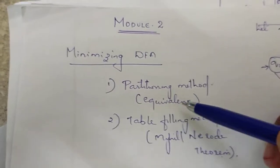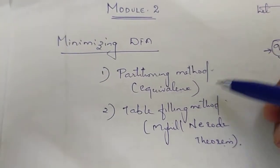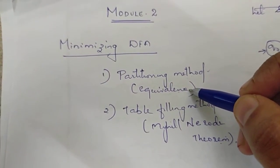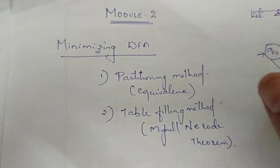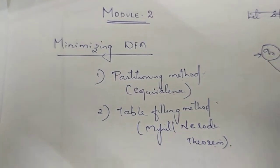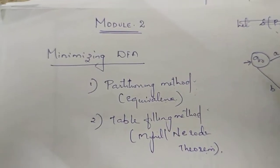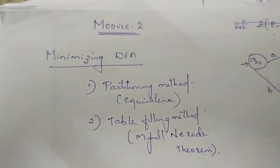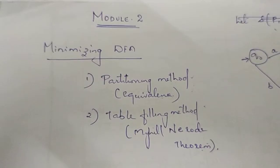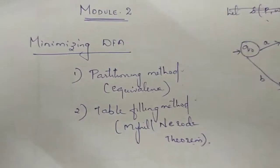For DFA minimization, we find the relation of zero equivalence. If we use zero equivalence, we set the final states in the DFA and the non-final states separately. Then we compute one equivalence, two equivalence, and so on. That is what we do in the partitioning method. We stop when the next equivalence produces no new partition, then we construct the minimized DFA transition diagram.